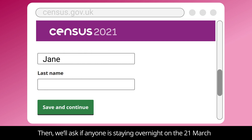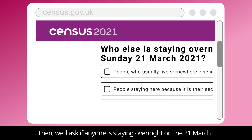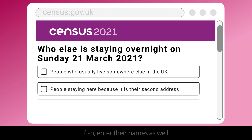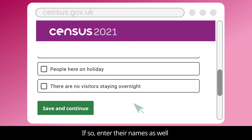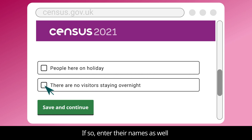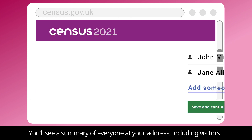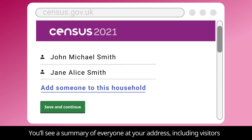Then, we'll ask if anyone is staying overnight on the 21st of March. If so, enter their names as well. You'll see a summary of everyone at your address, including visitors.